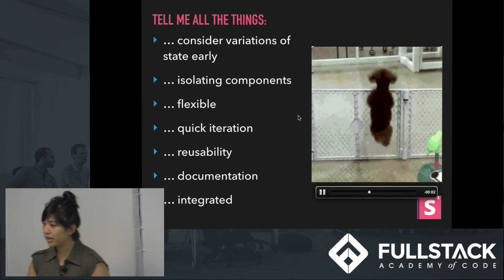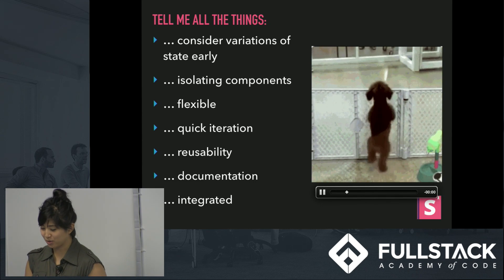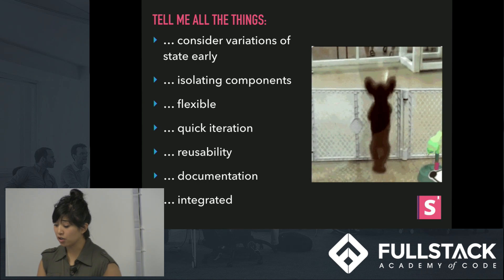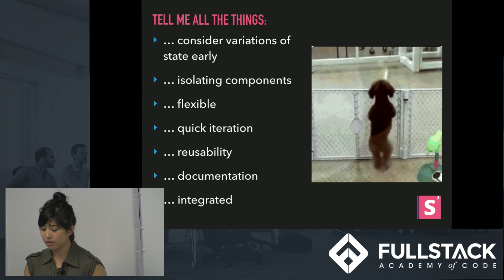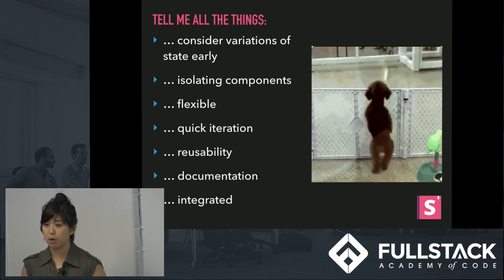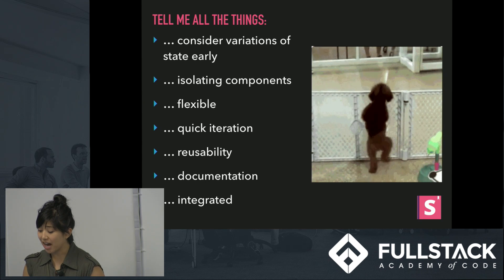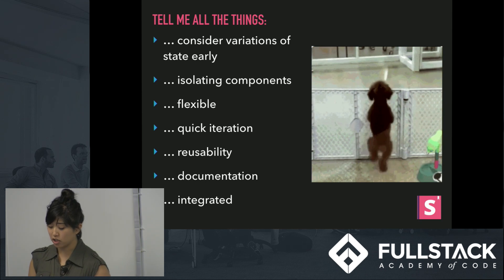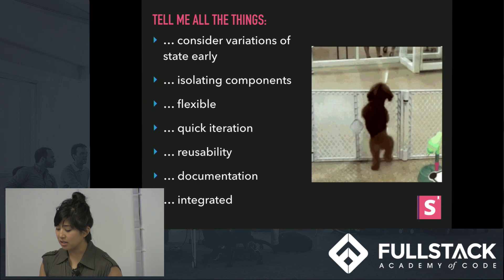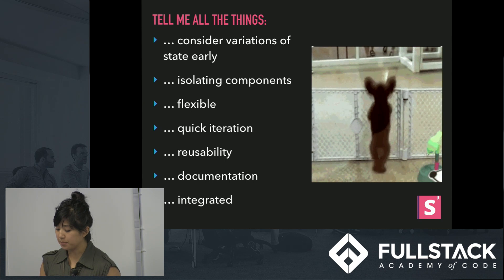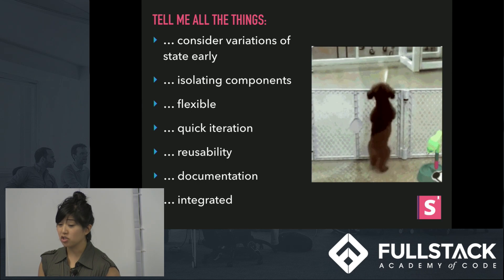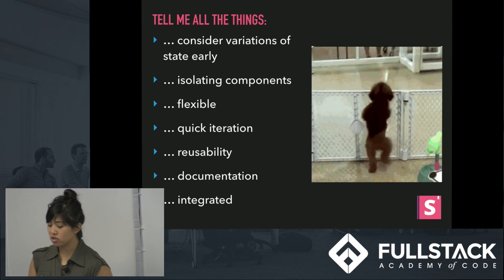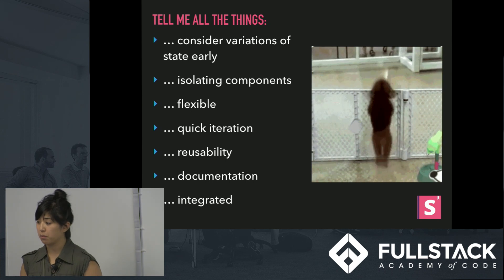To recap all the things that you get with Storybook for React: it inherently encourages you to consider variations of your state early on. It allows you to work on an isolated component without worrying about the entire state of the app. It allows you to develop with flexibility and accommodate for changes. You can find your components easily for reuse and see related props. It can serve as documentation for collaborating with cross-functional teams. And you can see the UI changes online and review the app without leaving your browser.